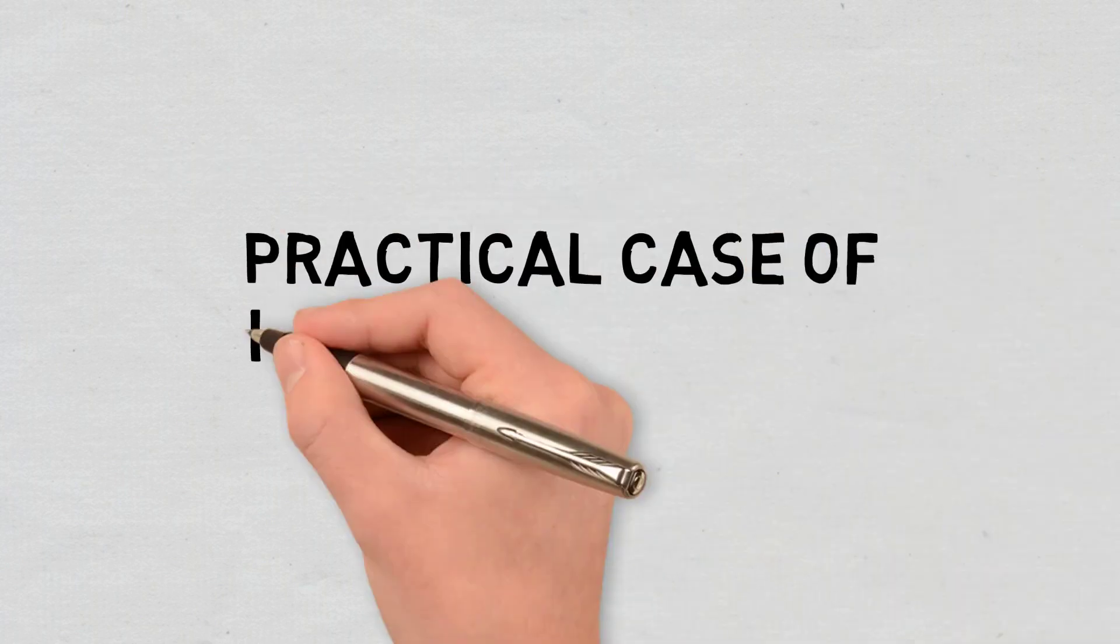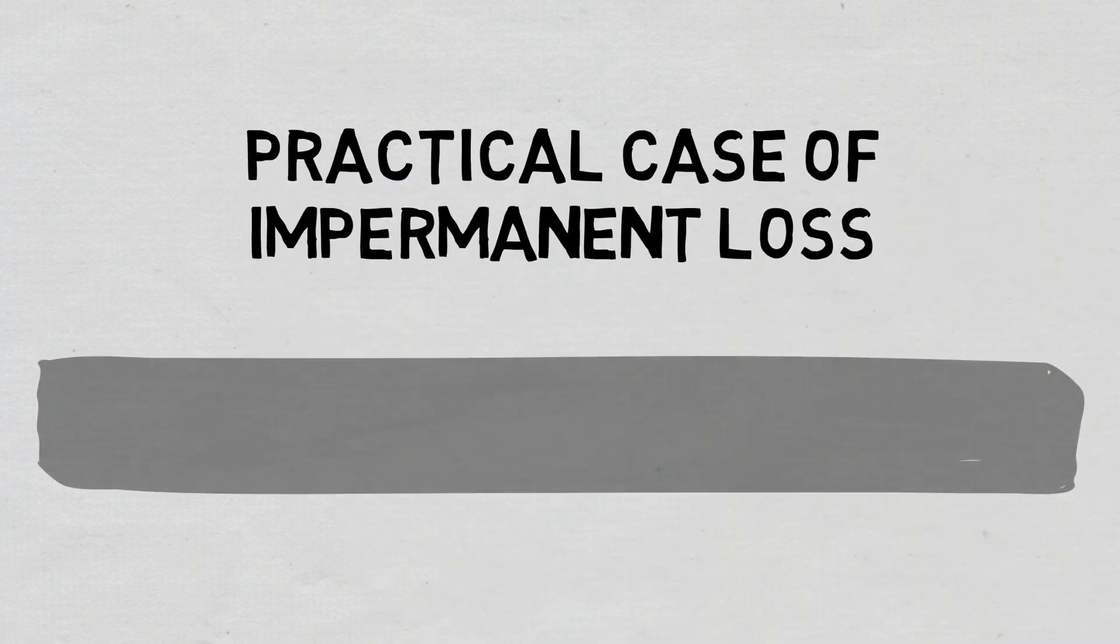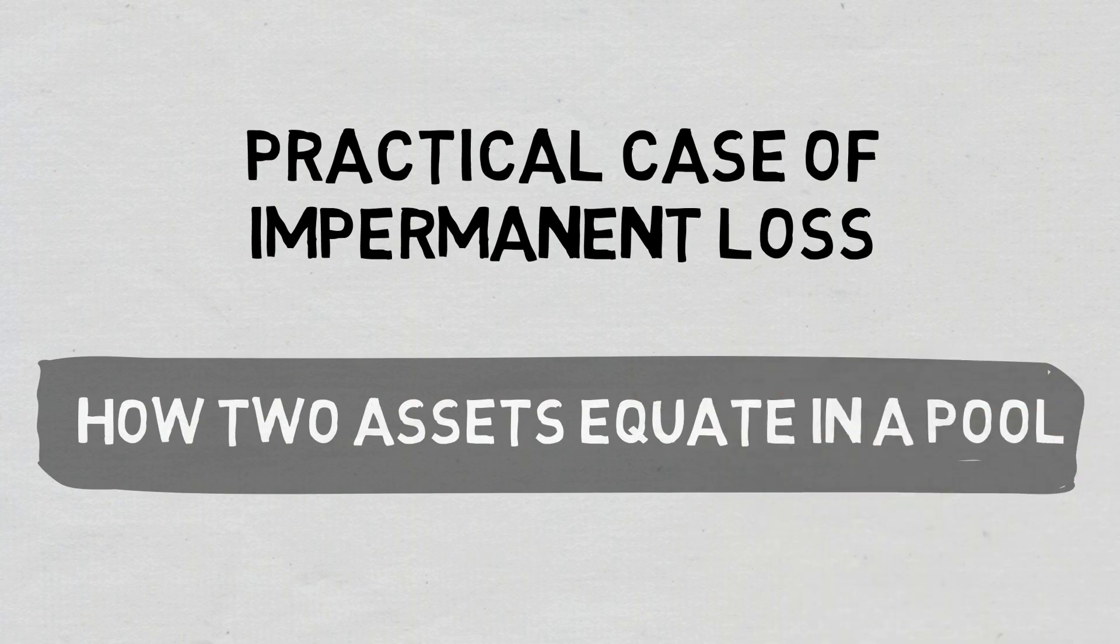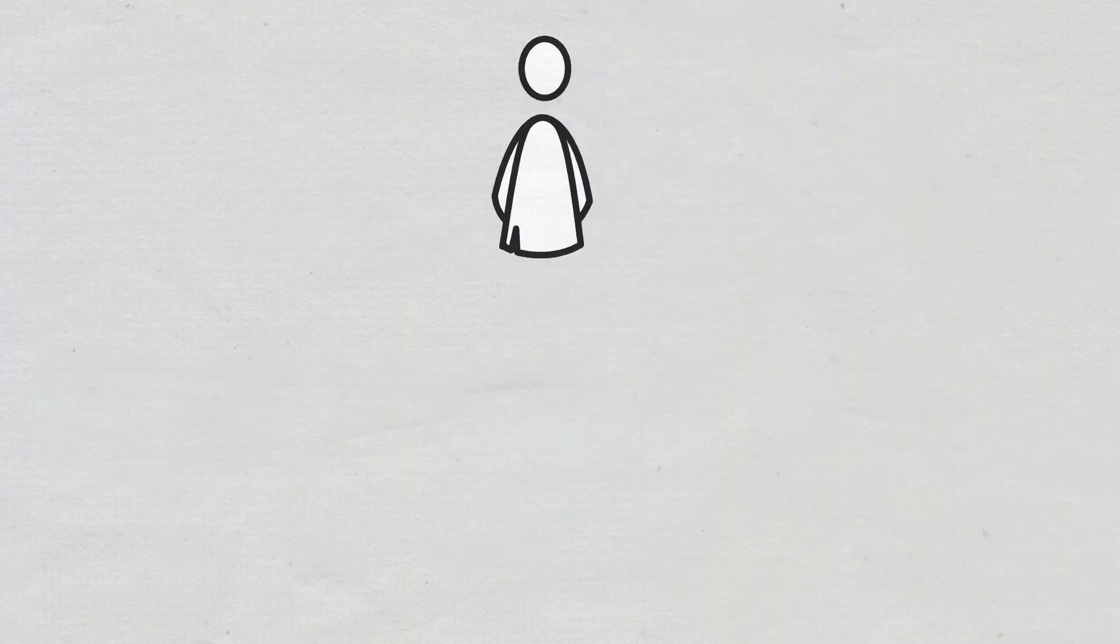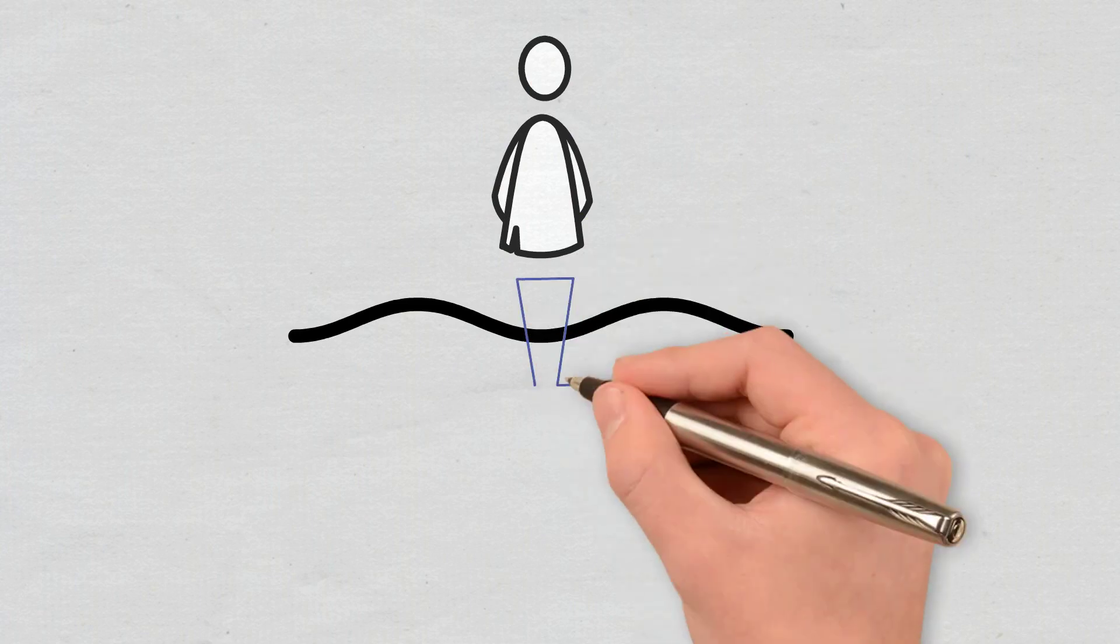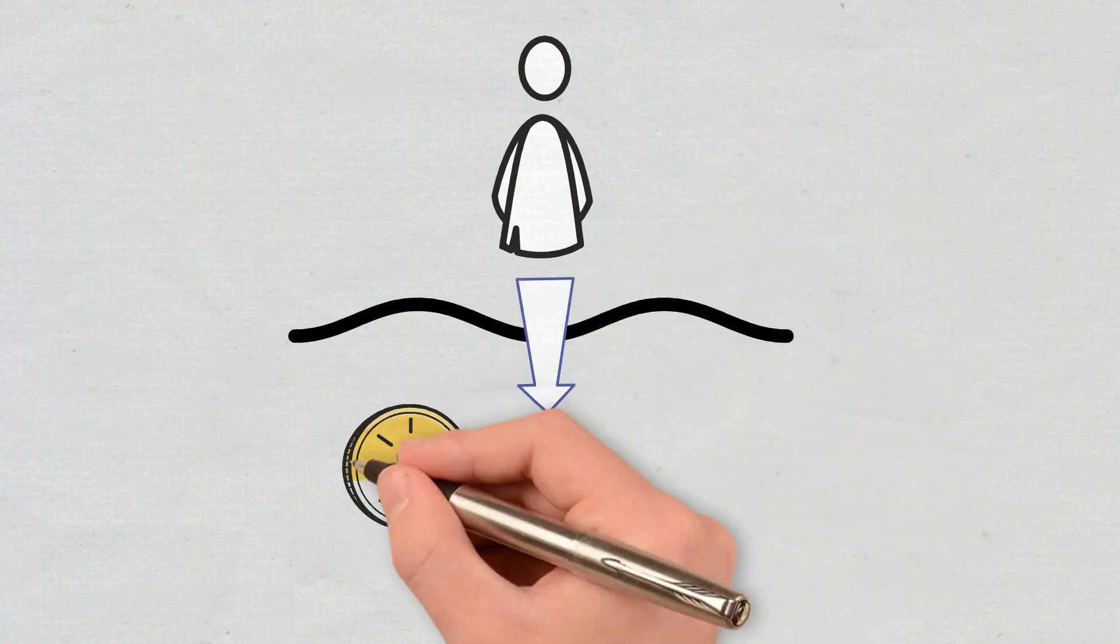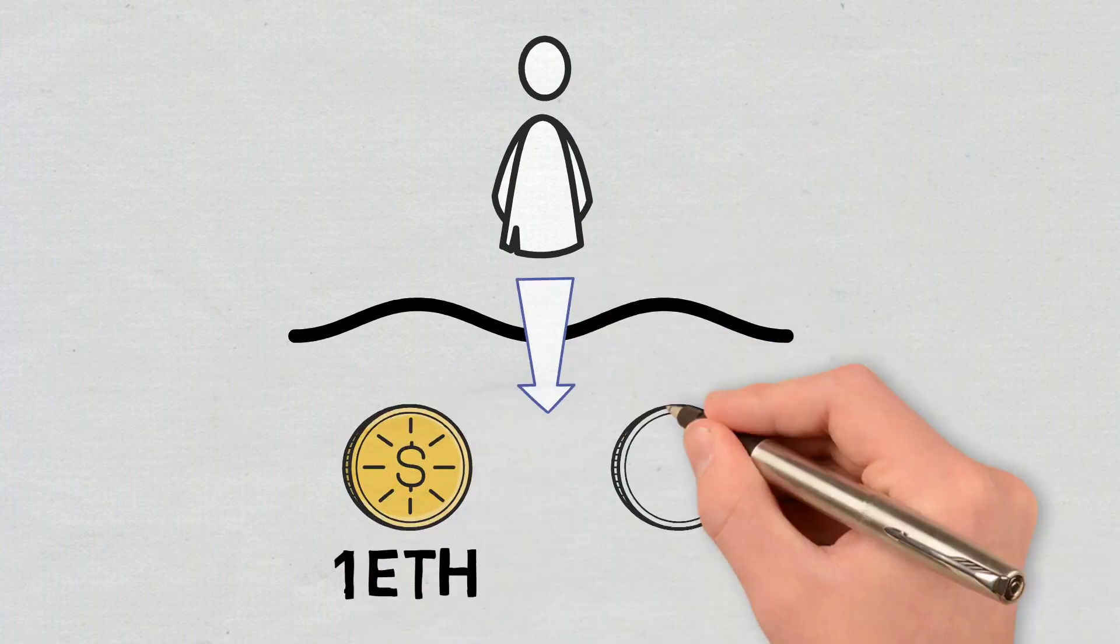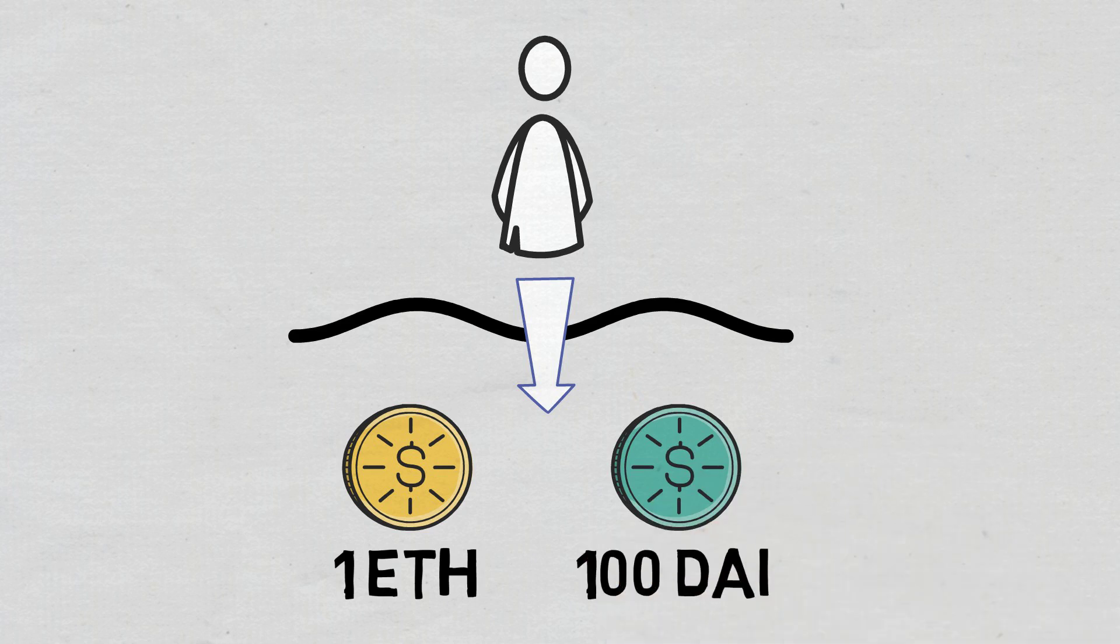Practical Case of Impermanent Loss: How do assets equate in a pool? To support the funds of an AMM, person X deposits 1 ETH and 100 DAI in a liquidity pool at a 50-50 ratio.